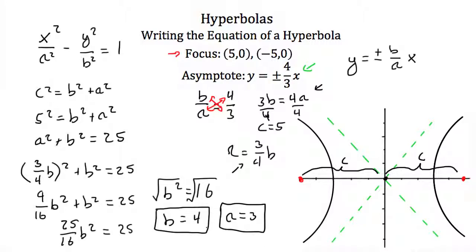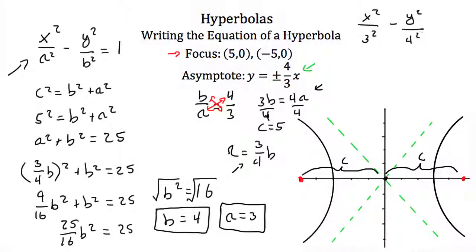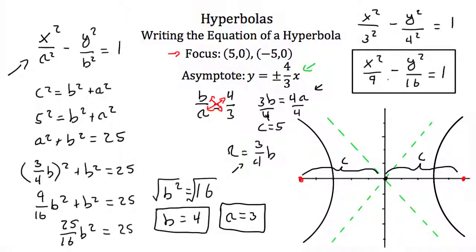Plugging this information back into our standard form equation, we get x squared over 3 squared minus y squared over 4 squared equals 1. Simplifying, that's x squared over 9 minus y squared over 16 equals 1, and that is the equation of this hyperbola.